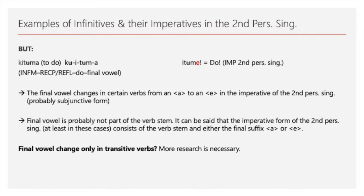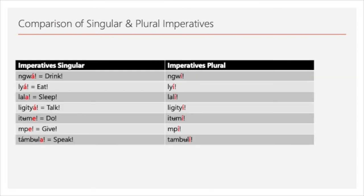So it can be said that the second person singular imperative consists of the verb stem with either a final 'a' or the subjunctive 'e'. I noticed — though it needs further research — that the subjunctive form appears only in transitive verbs, at least among those I asked about. Intransitive verbs like 'eat', 'sleep', and 'drink' always have the normal final 'a', but I'm not sure if that's correct.